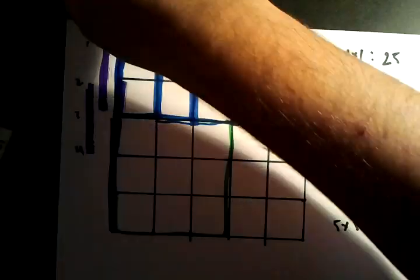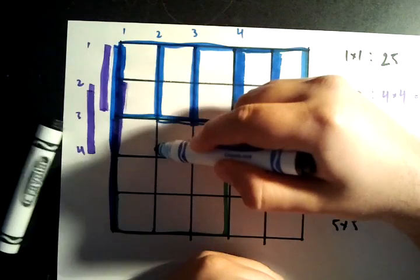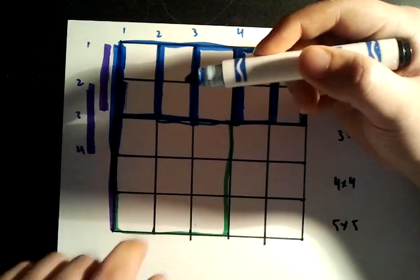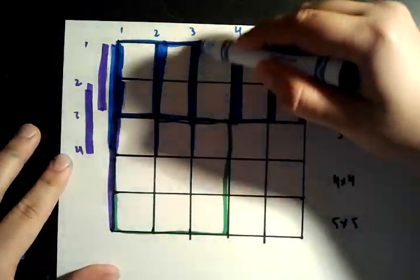And then, same idea applies for 3x3. In 3x3, there's 1, 2, 3 possible ones.